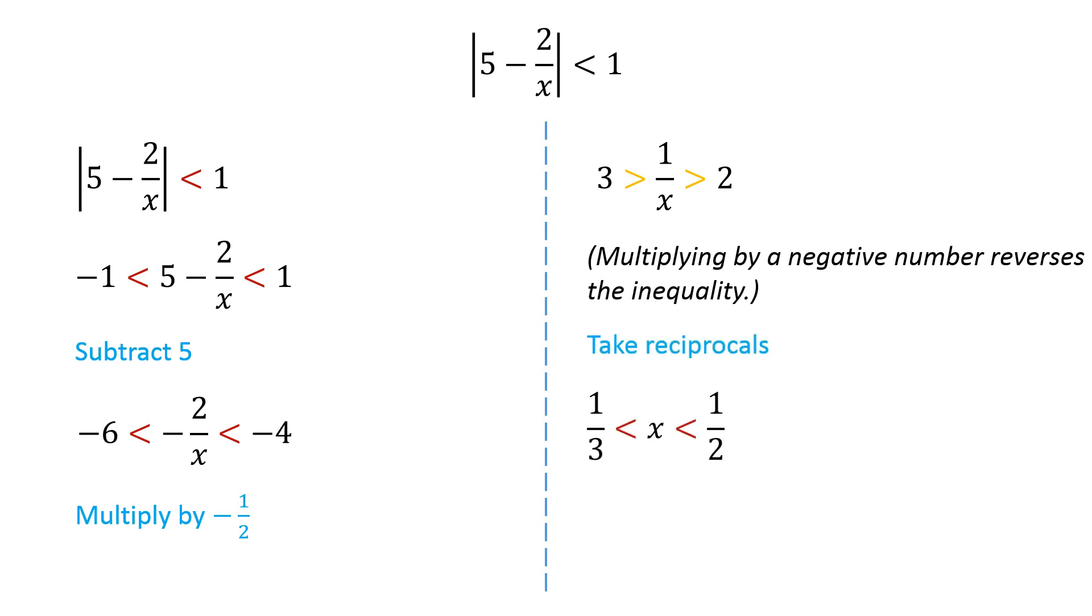Taking reciprocals we get, x is greater than 1 over 3 and less than 1 over 2. Note that taking reciprocals in an inequality in which both sides are positive also reverses the inequality.